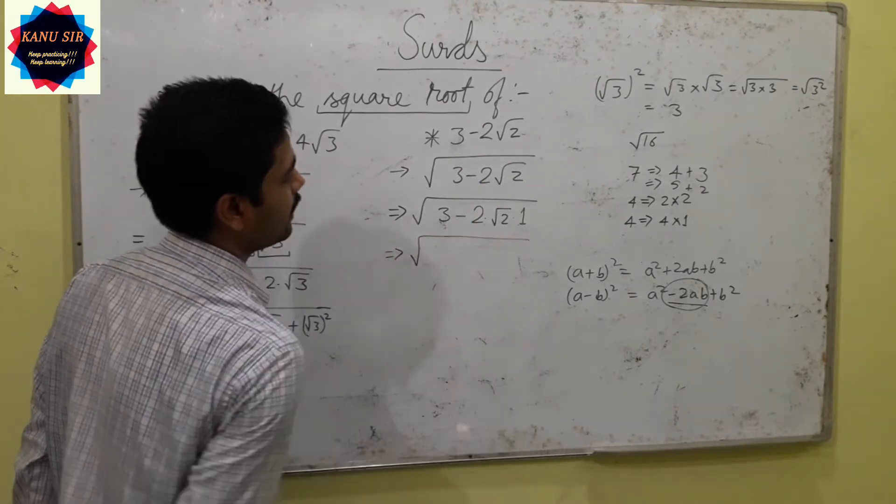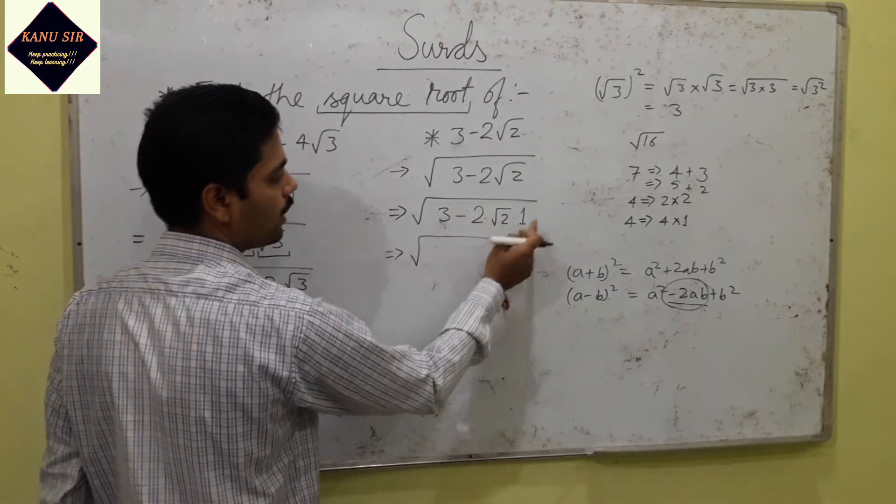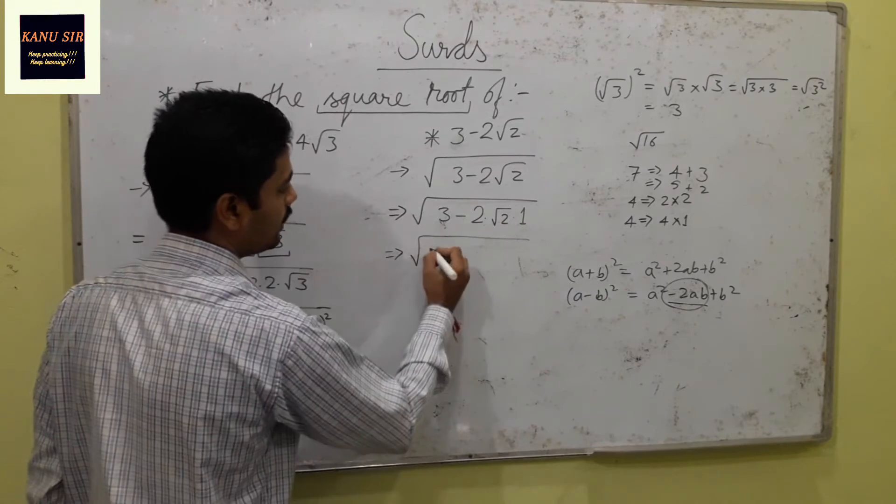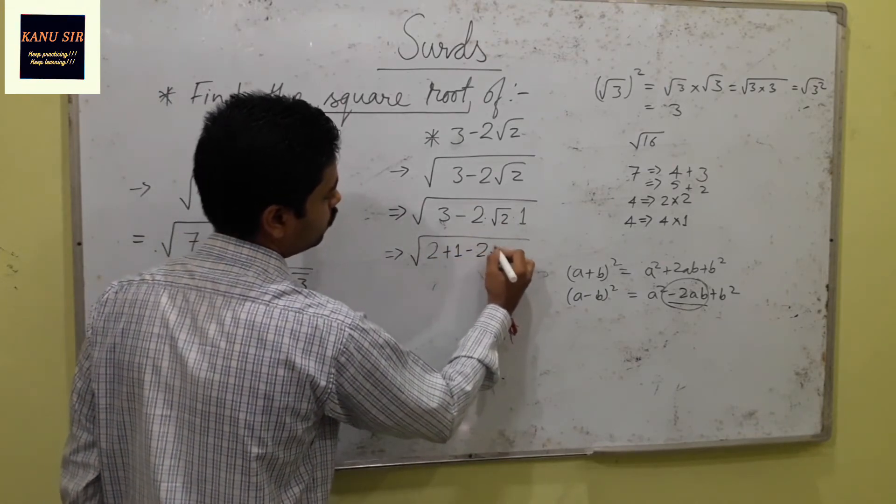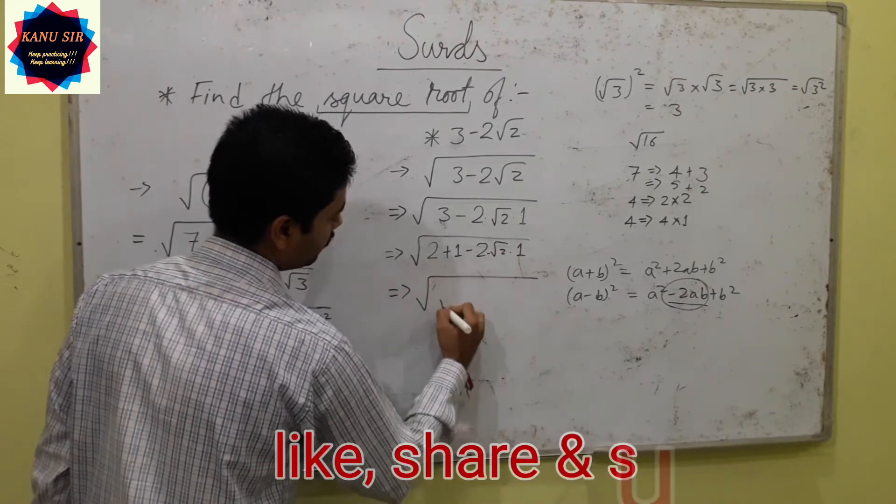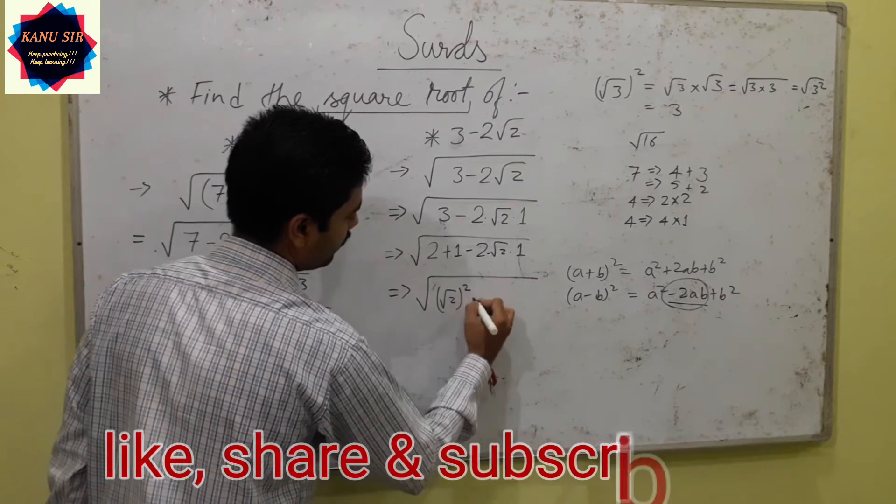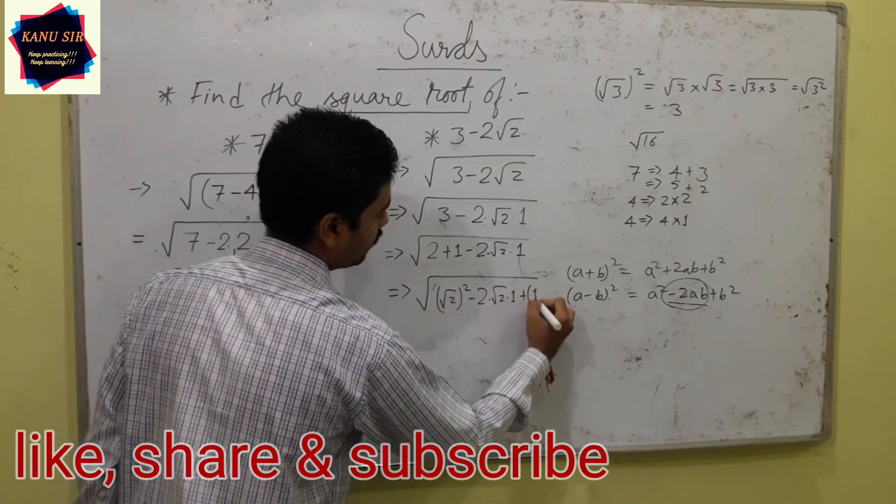So a is root 2. We can get an idea now: square of root 2 is 2, and square of 1 is 1. 2 plus 1 equals 3. So 3 can be broken as 2 plus 1 minus 2 root 2 into 1. Now 2 can be written as root 2 whole square minus 2 root 2 into 1 plus 1 whole square.